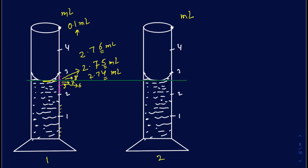The second cylinder doesn't measure tenths of milliliters, so I have to guess where the reading falls between 2 and 3. Someone might say 2.7, someone might say 2.6, and if someone is looking at an odd angle they may say 2.8. That last digit is the estimation, and 2 is the certain digit. You can clearly see how not having a precise tool changes the readings — saying something is 2.7 versus 2.75 does make a big difference.